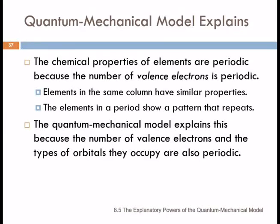The quantum mechanical model explains the reason that we see this periodic sequence of chemical properties is because the number of valence electrons is periodic.